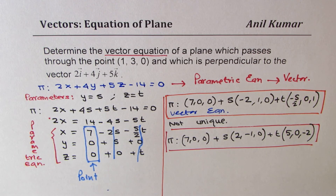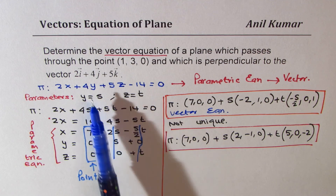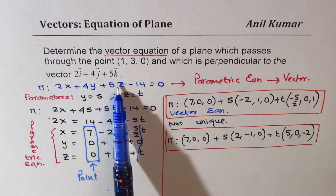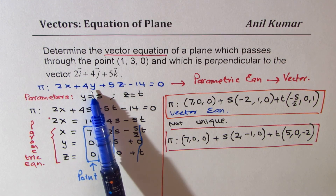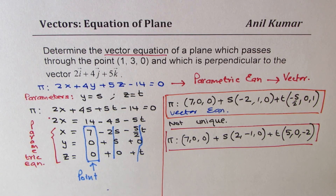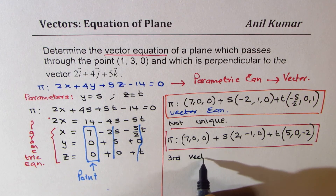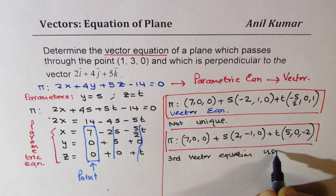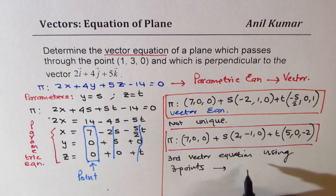You could also go directly from the Cartesian equation to the vector equation by taking three points. The given point (1, 3, 0) is one; setting y and z to 0 gives the x-intercept (7, 0, 0); using the y-intercept gives another. Three points lead to two direction vectors and a complete vector equation.